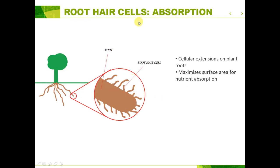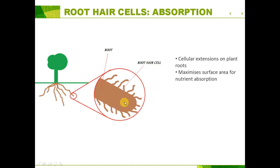Next up is root hair cells. I've drawn a very simple diagram of a tree with its roots below, and I've enlarged a small portion of that root. As you can see, the big bulk is the root and it has these little extensions on it. These cellular extensions on plant roots are what you call root hair cells, and their purpose is to maximize the surface area for absorption of nutrients in the soil, because that's what the purpose of roots are.